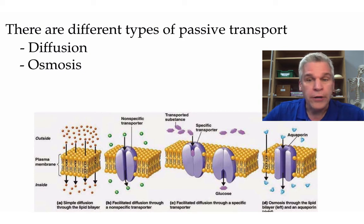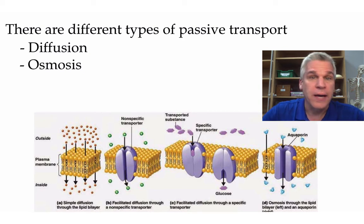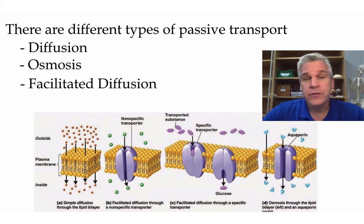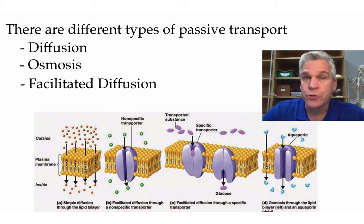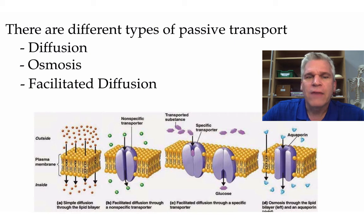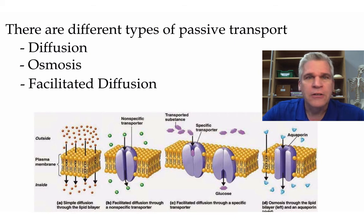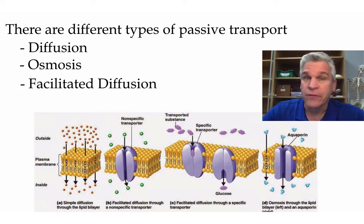Another example is osmosis. Osmosis is water going from high to low concentrations. A third type is facilitated diffusion — these are larger molecules that need to travel through one of those transport proteins. We'll take a look at this specifically in another video.